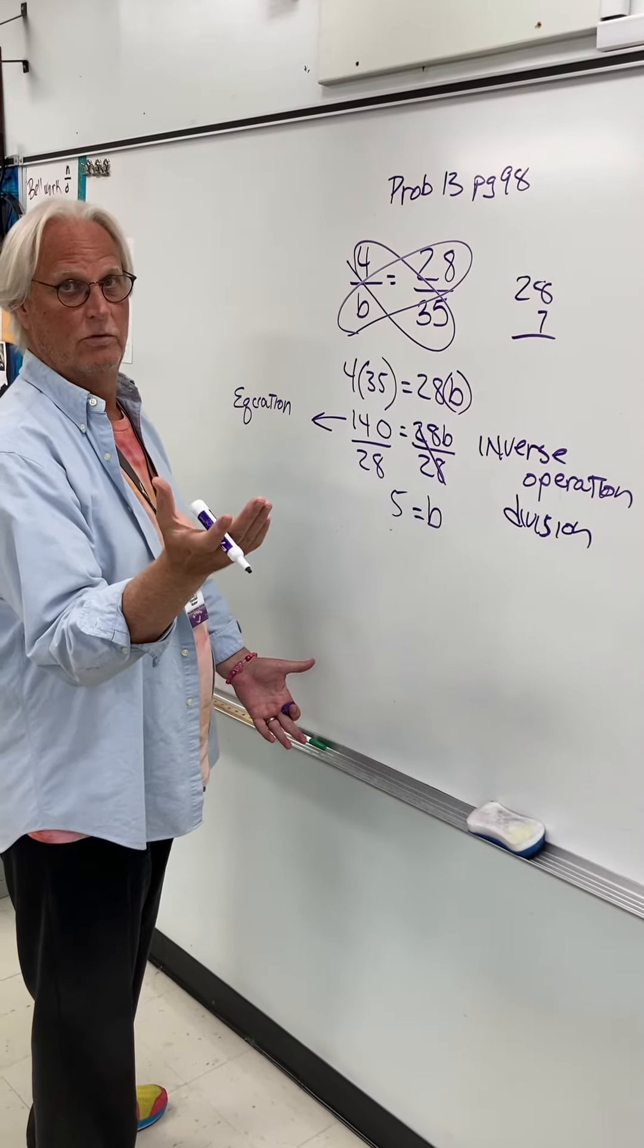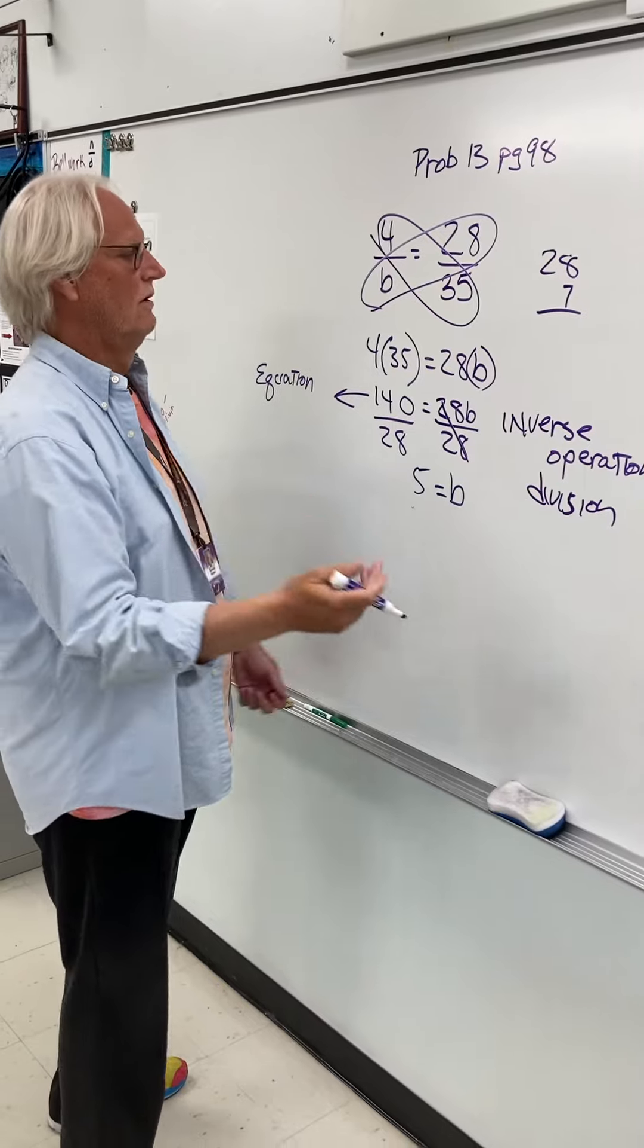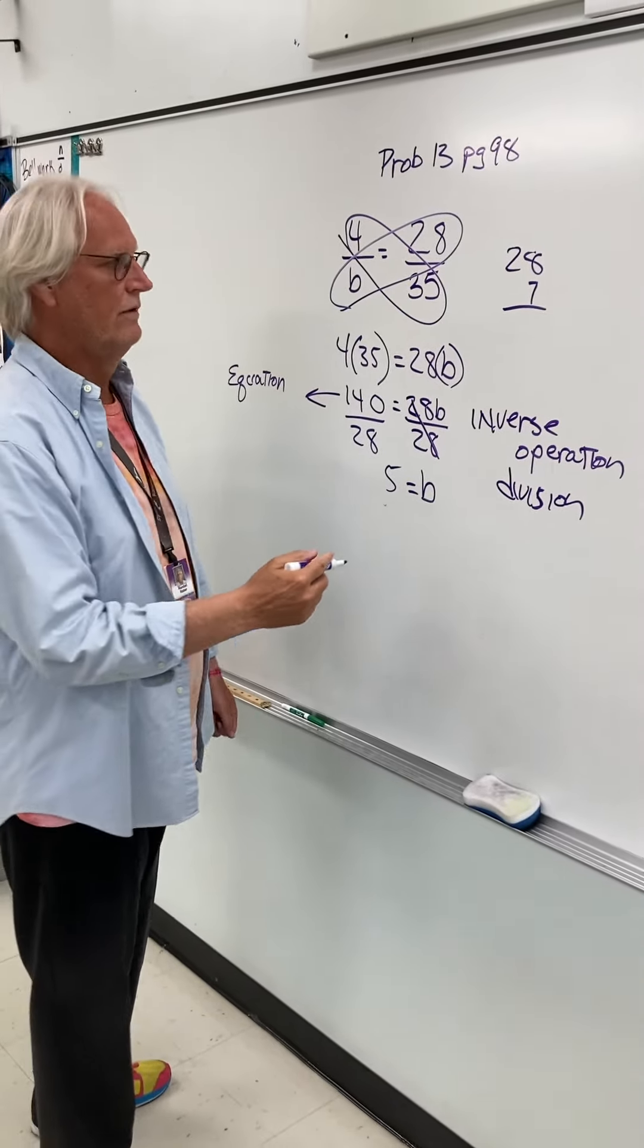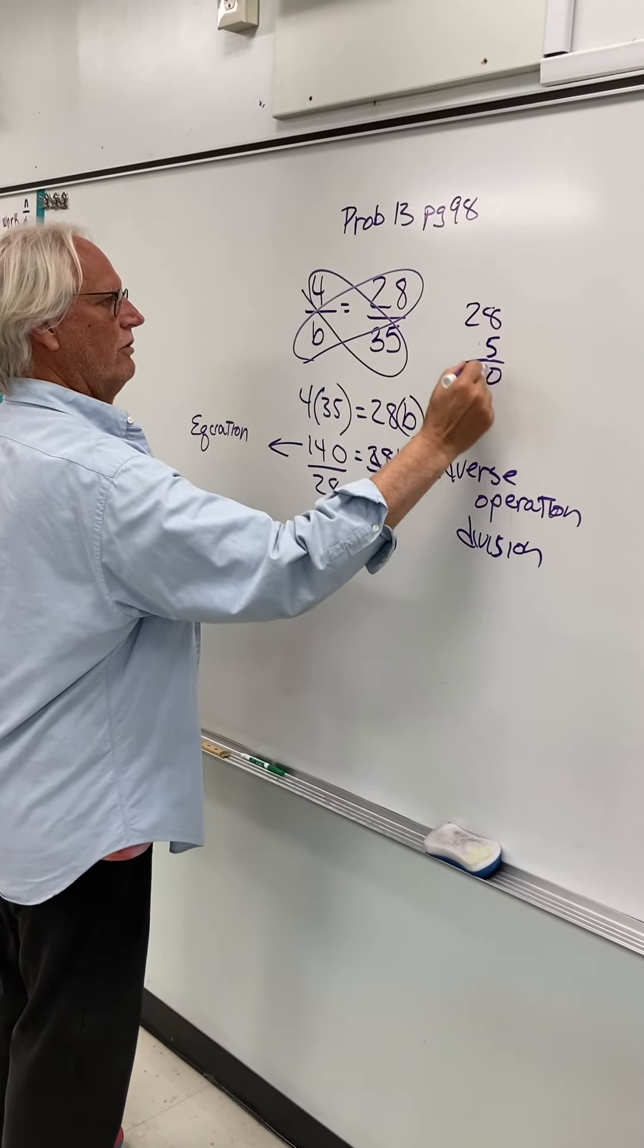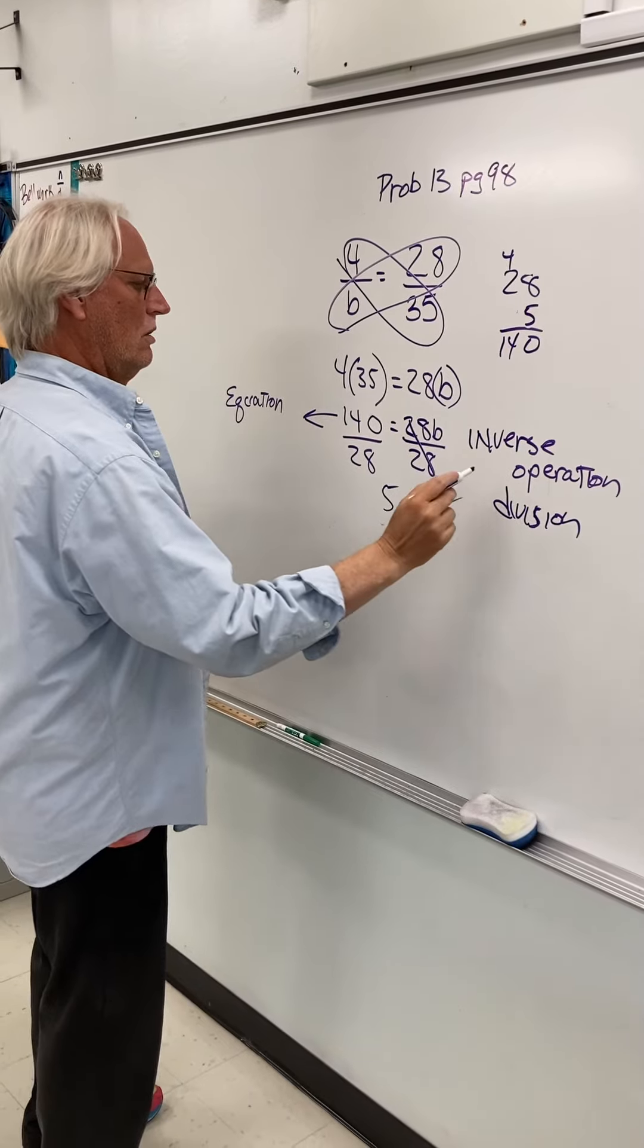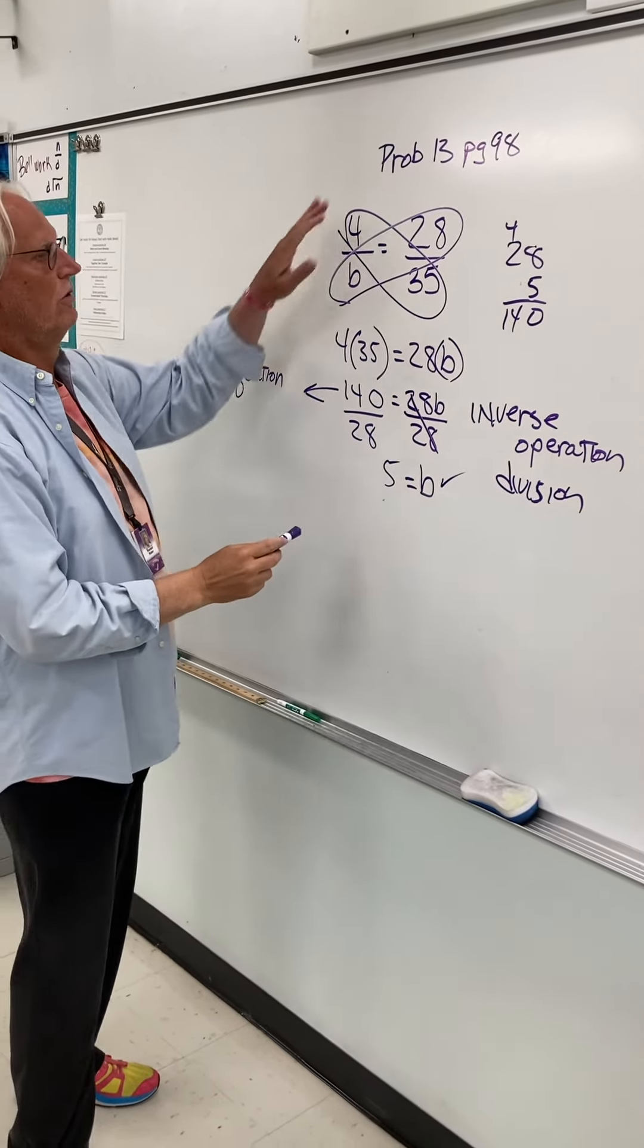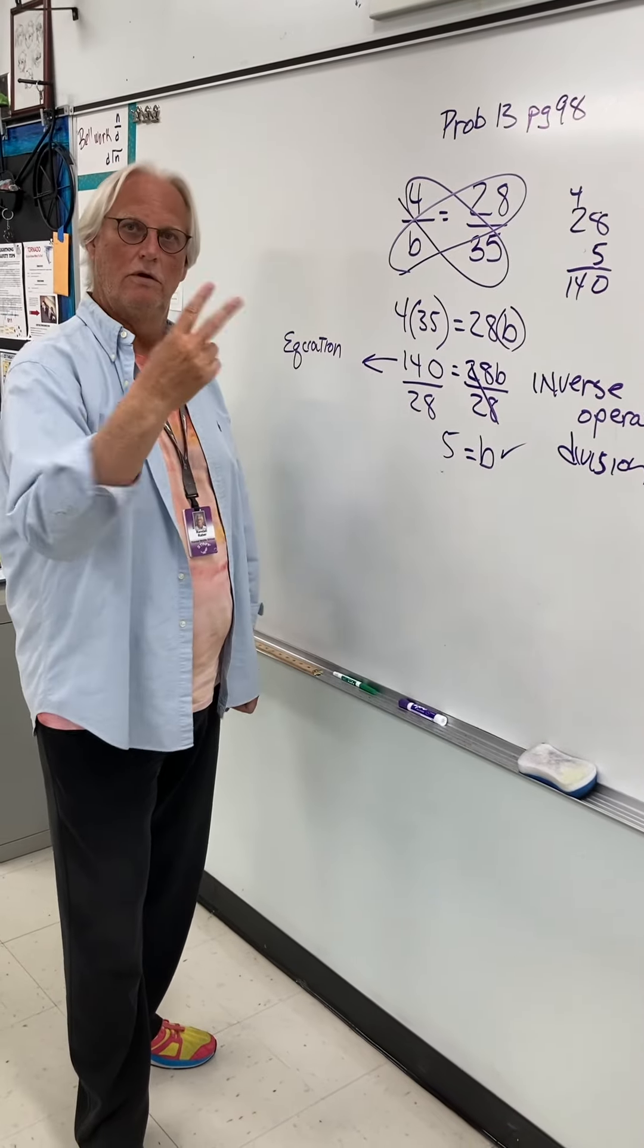Sometimes if we're going to make a mistake, it's okay. Sometimes you all make mistakes too. That's why we use pencil, not pen. So 28 times 5, 0, carry the 4, 140. So the correct answer for this particular problem is b equals 5. Do now.